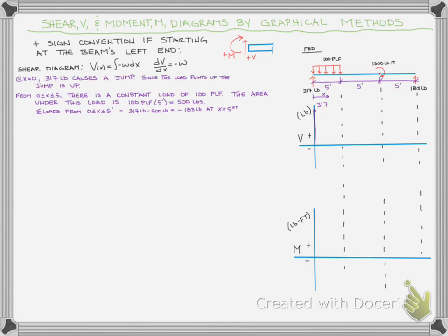That 500 area is going down — it's negative. So if we sum our loads, we're going to have 317 minus 500, which gives us negative 183 pounds at five feet.